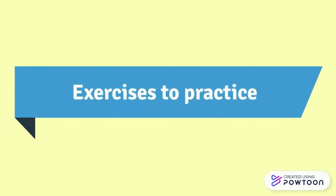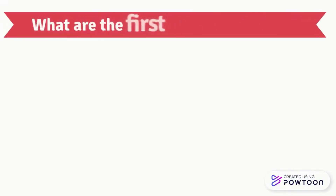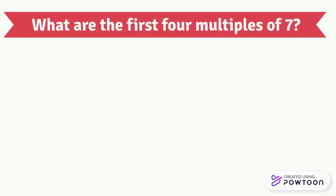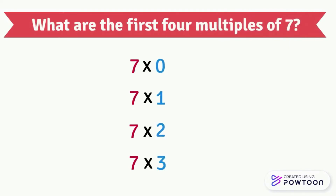Exercises to practice. What are the first 4 multiples of 7? To find them, just multiply 7 by 0, 1, 2, and 3. So the first 4 multiples of 7 are 0, 7, 14, and 21.